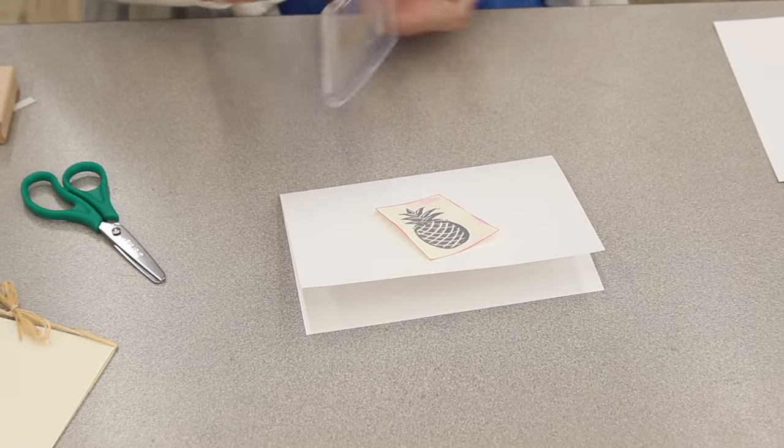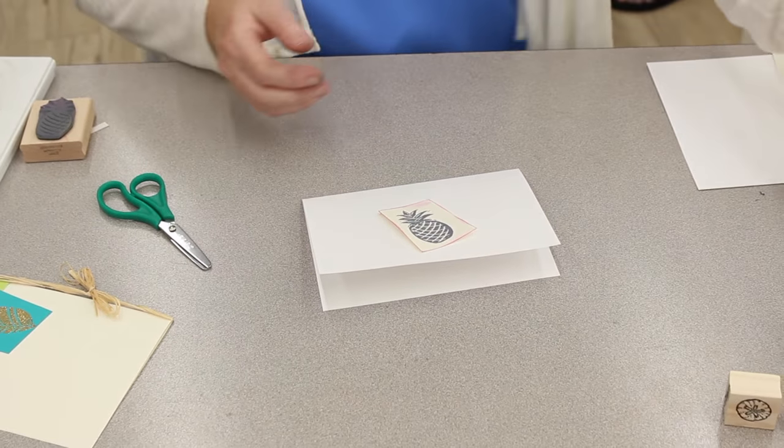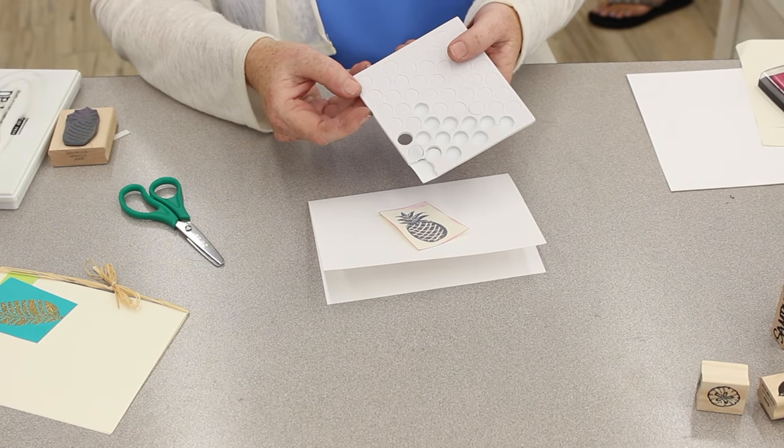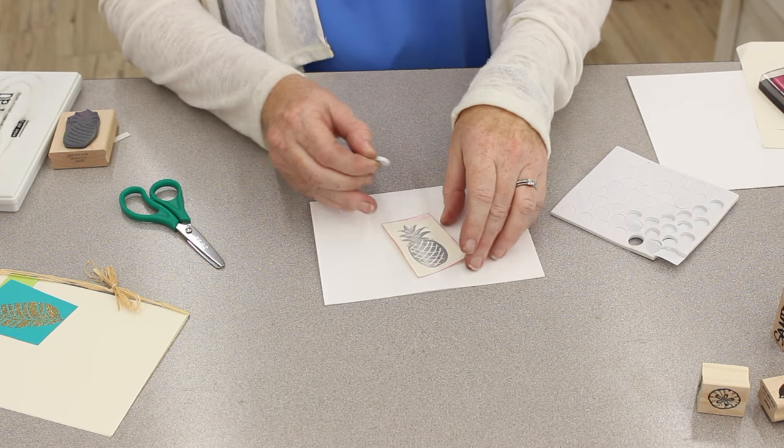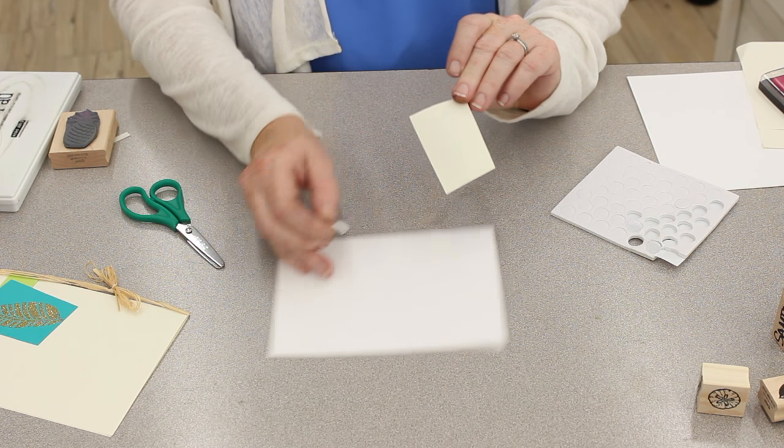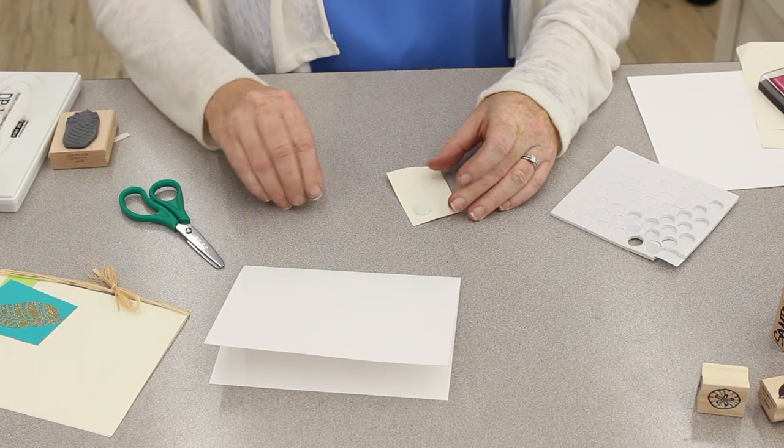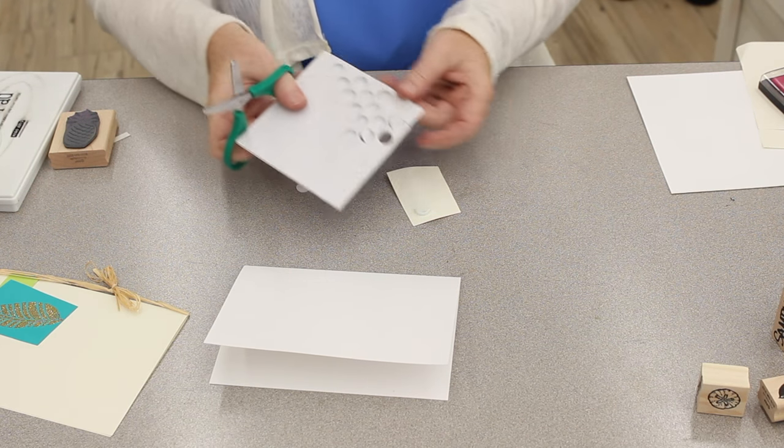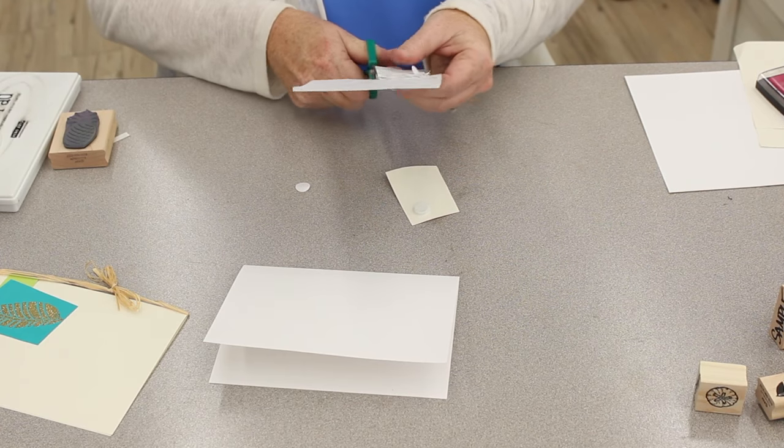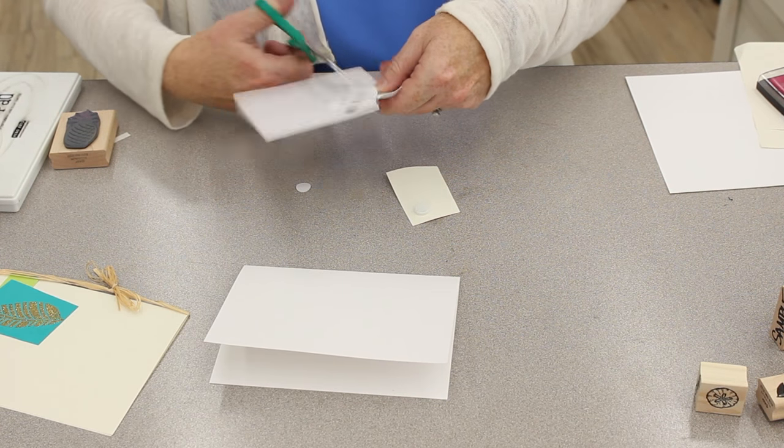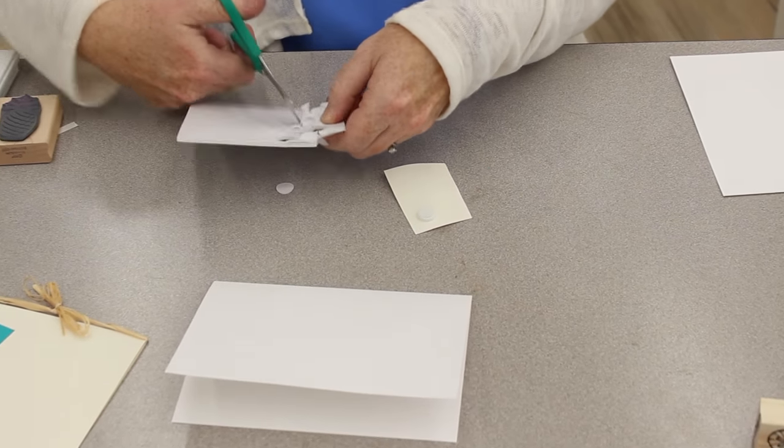Now that that is finished, I'm going to take pop dots and we're going to make this a little dimensional. On the back here I will put some pop dots. Now you also have all of this that you can use, you don't have to use just the circles. It's a little tricky but don't waste that part, that's good stuff back there.